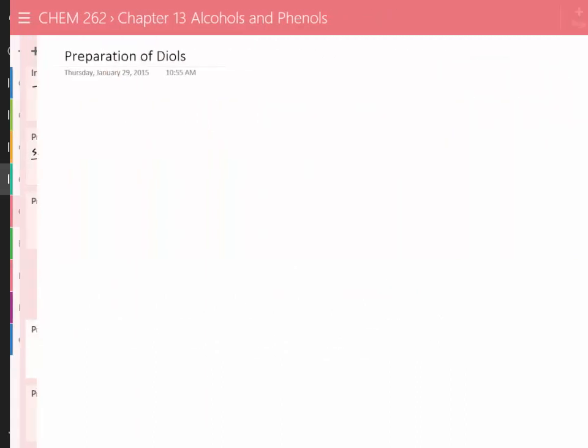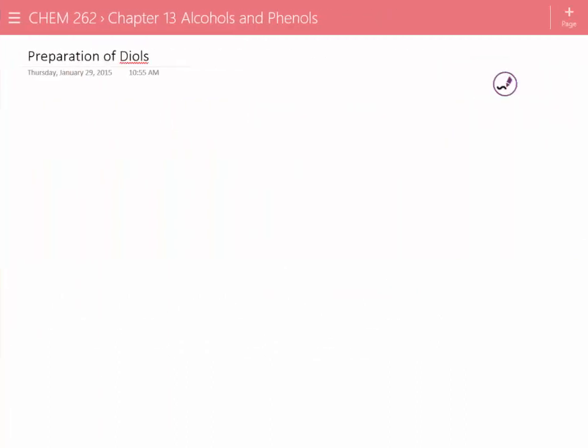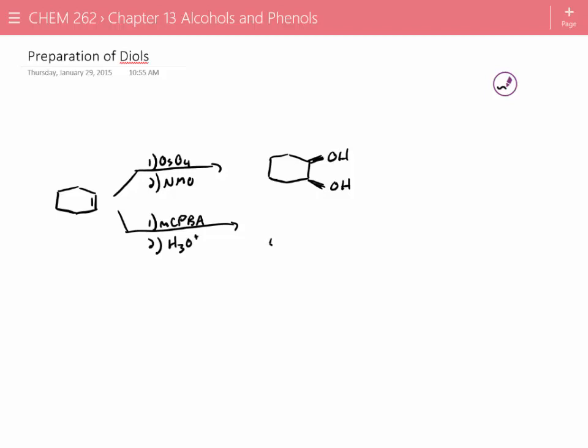Diols, we've seen already. So the main method we've seen for making diols involves taking something like an alkene. And we already saw this yesterday. And we can do osmium tetroxide followed by NMO. And if we do that, we get our syn-diol. So that's all review. And the reason we call it a diol is just simply because it's two alcohols. So diol is the suffix for alcohol. Conversely, we can use MCPBA followed by source of acid. And then we can get our anti-diol.